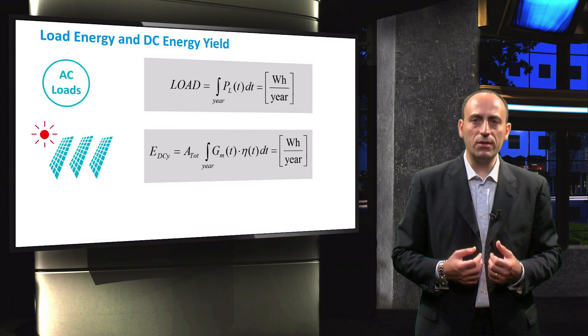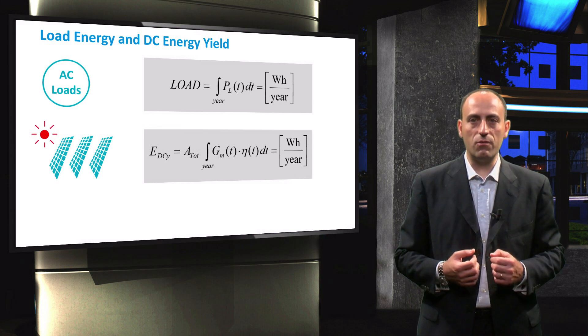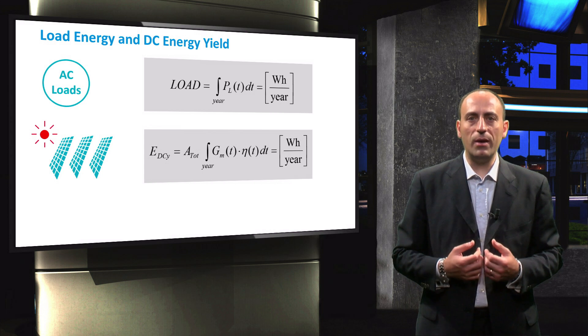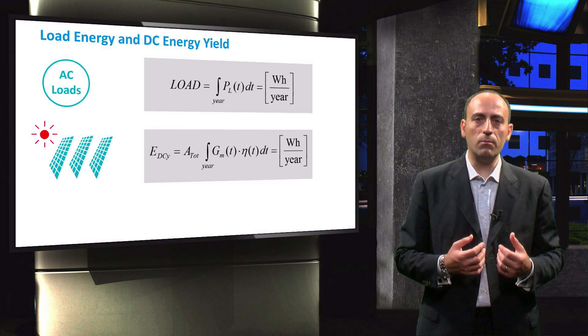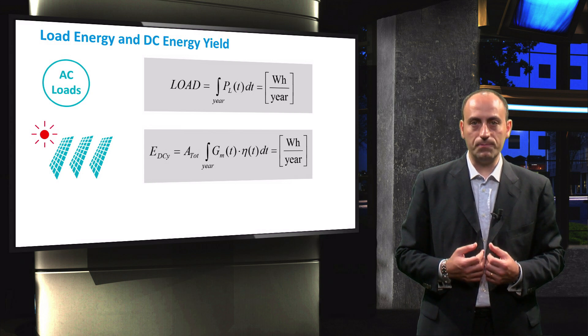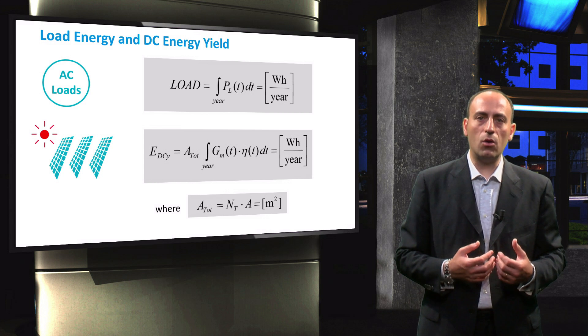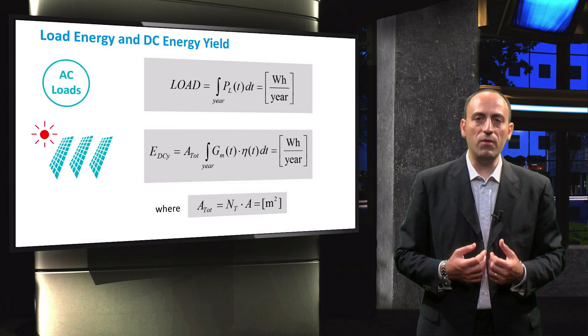The generated energy density per year is formed by integrating the product of the instantaneous irradiance, GM, and the instantaneous module efficiency, eta. The energy generated by the modules is then formed by multiplying this number by the total module area, A-tot. The total module area is defined as the product of the total number of modules, NT, and the area of a single PV module, A.